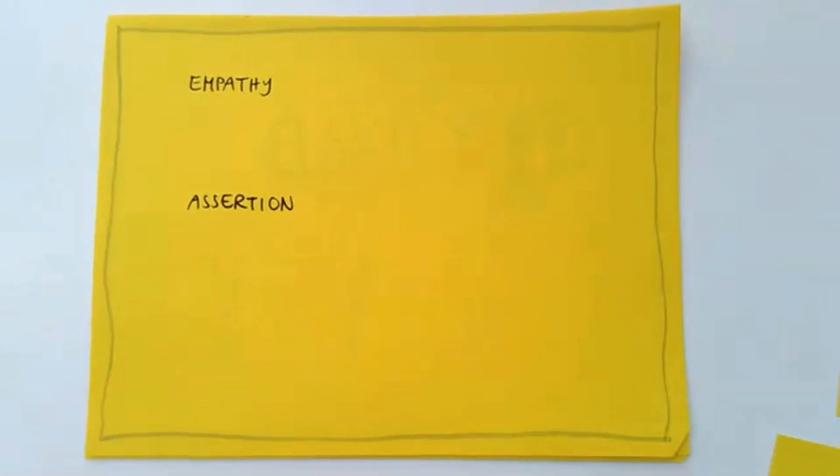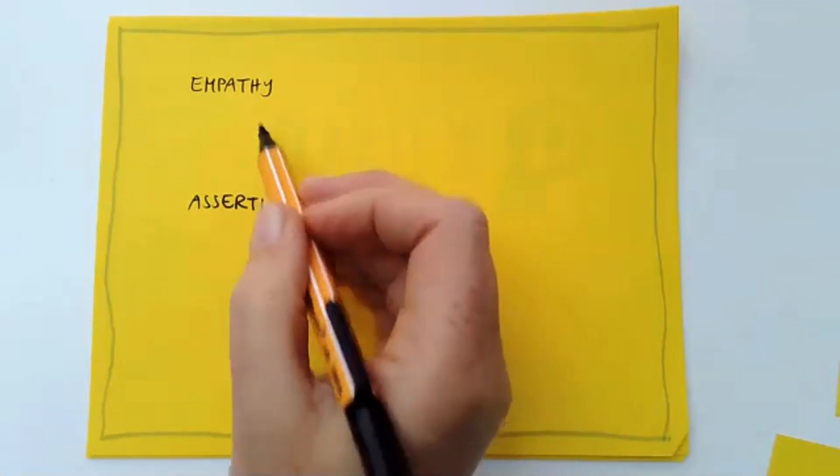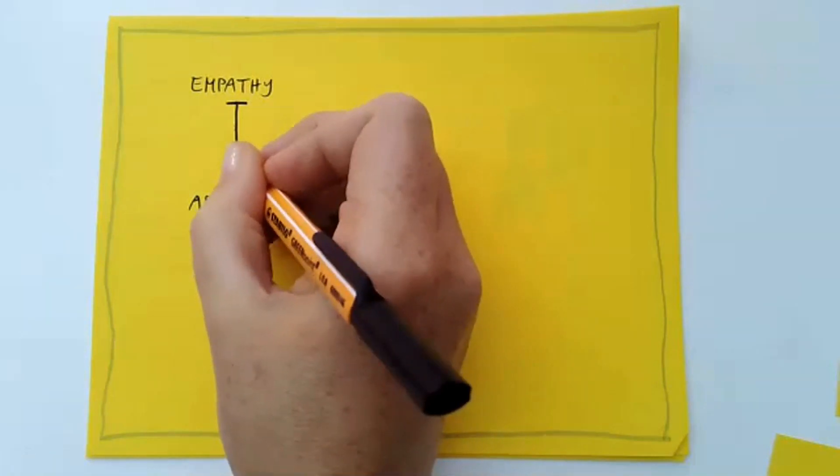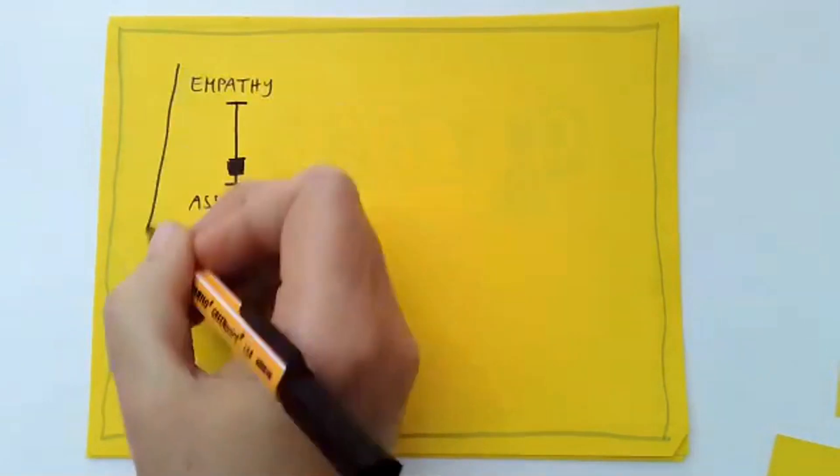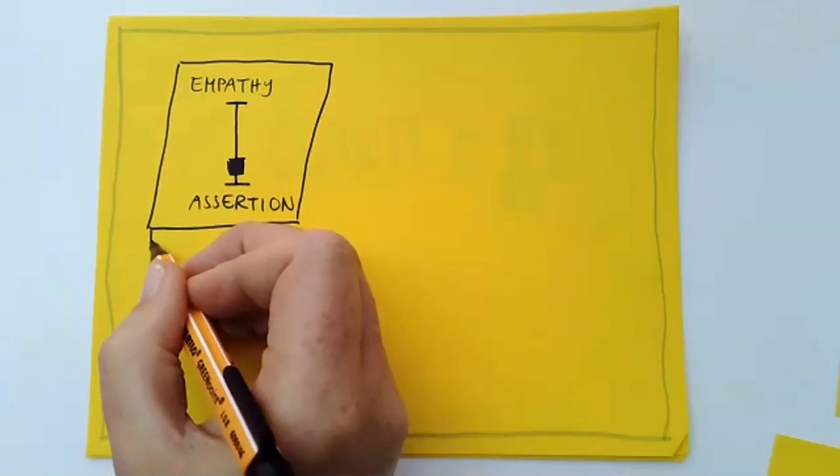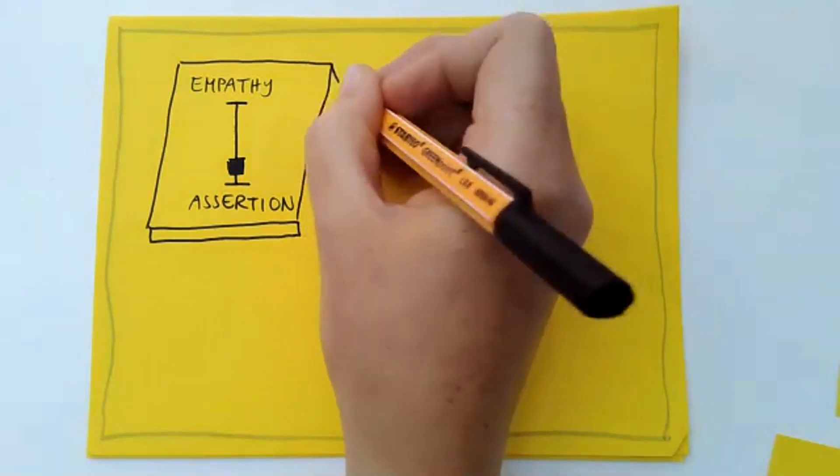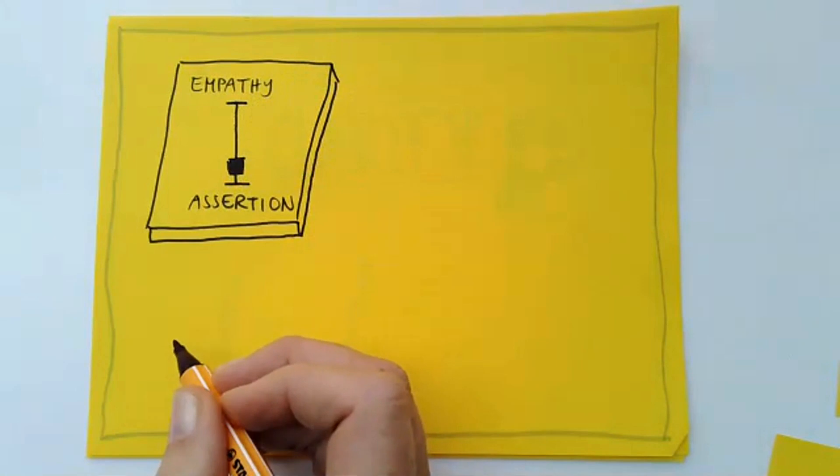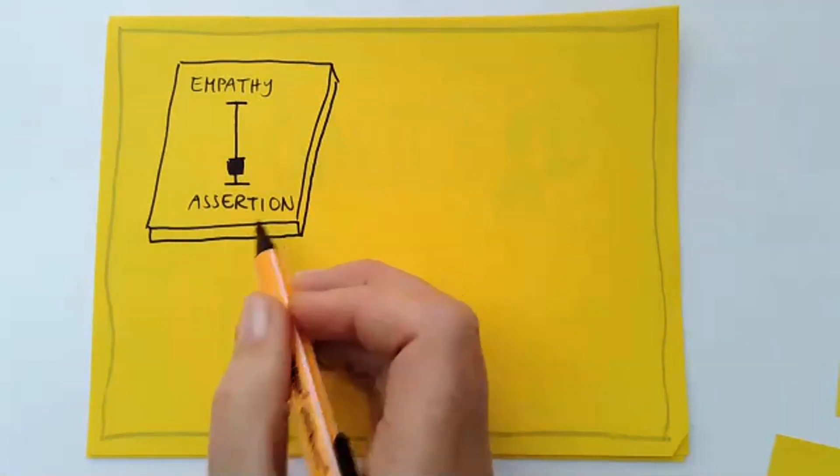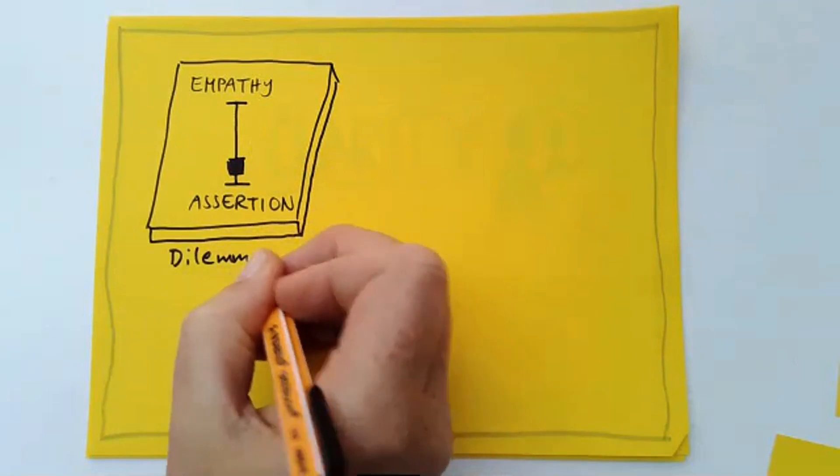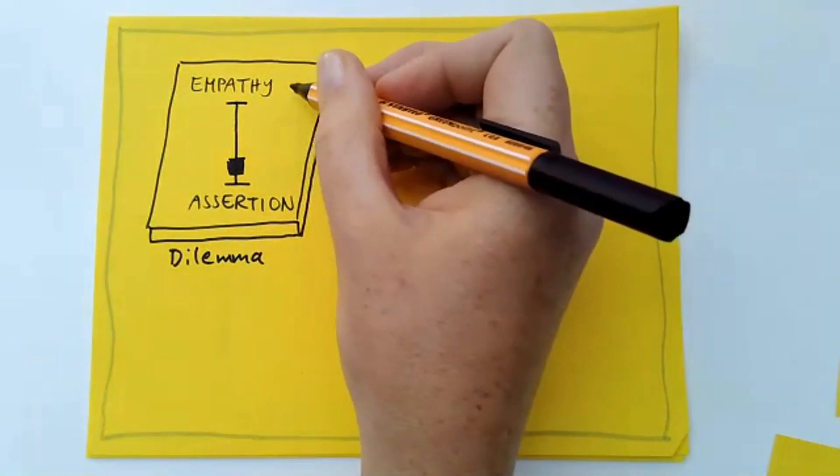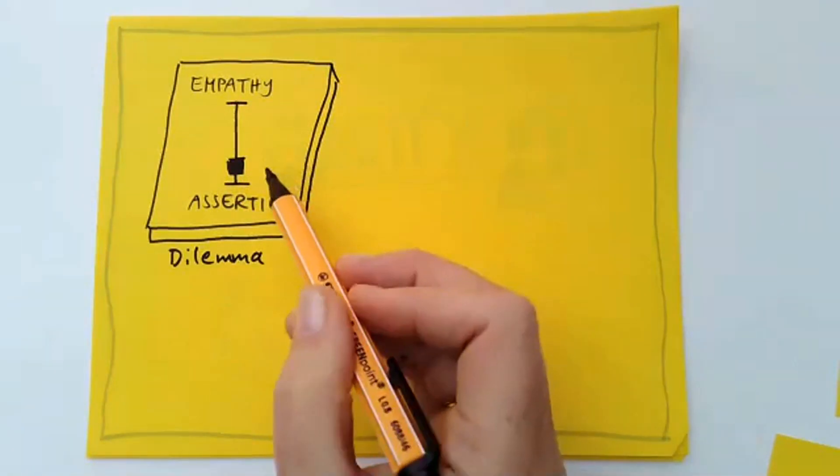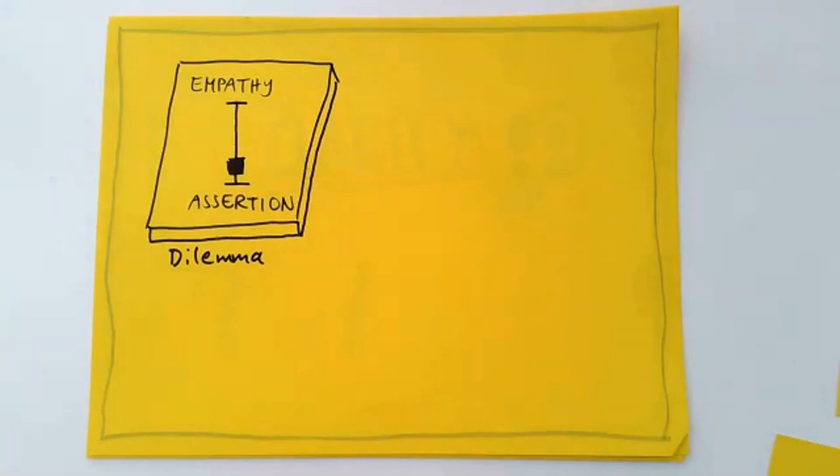However, what usually happens is that people are either too empathetic or too assertive in a given negotiation or conflict. Or that they switch. So I sometimes have this image in my mind that it's like a mixing board. I hope it's understandable so you can switch it up and down. And what sometimes happens in negotiations and escalated conflicts is that we face a dilemma. So should I listen to the other side? Should I be empathetic? Or should I care for my own concerns? How should I react? And I think this is one reason why many people feel very ambivalent about being engaged in a conflict or negotiation.